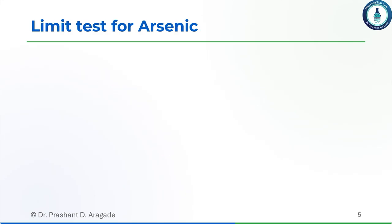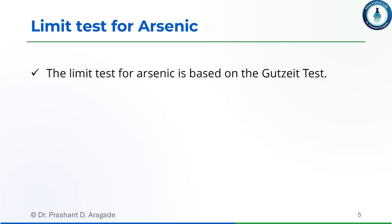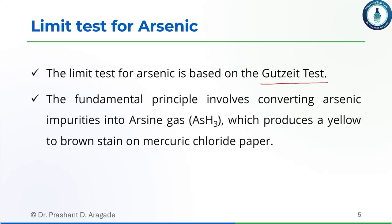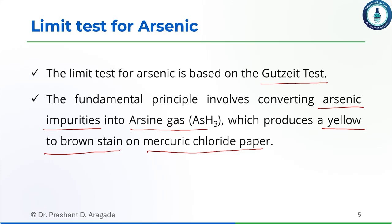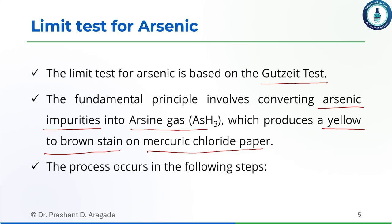Let us start with the discussion on the limit test for arsenic. This limit test is based upon the Gutzeit test. The fundamental principle is that it converts all arsenic impurities into arsine gas, which then reacts with mercury chloride paper to produce a yellow or brown color stain. This conversion occurs in various steps.